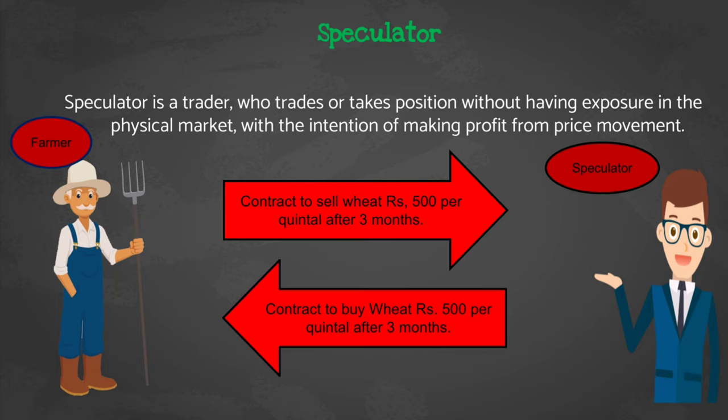The farmer contracts with the speculator to sell wheat at 500 rupees per quintal after two months. Here, the speculator is entering the future contract with the intention of making profit. The speculator is not entering the future contract to avoid risk — because the speculator is confident in his future price analysis that wheat price will increase from 500 in the future. The speculator's intention in entering the future contract is to earn profit from future price movement. Such a trader we call a speculator.